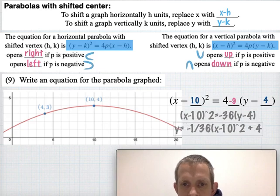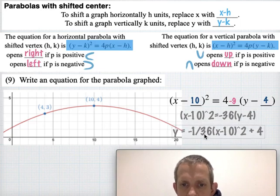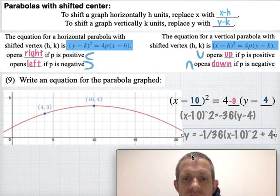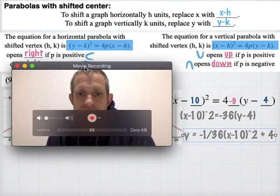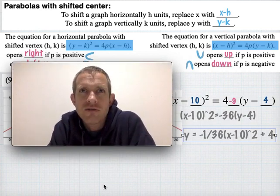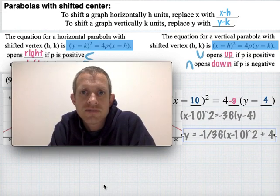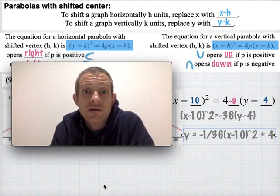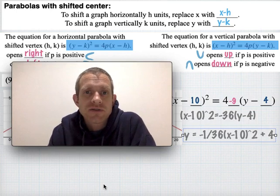So hope that helps you a little bit in looking at parabolas that are shifted in various places. In the next video, we'll kind of look at all the different types of conic sections, circles, ellipses, parabolas, hyperbolas, and talk a little bit more about their focus points and some applications. Why do we even care about the focus point? And so check back for that one. Hope you have a great weekend.